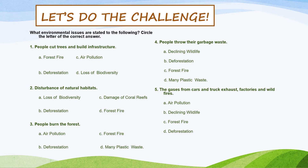Number one: People cut trees and build infrastructure. Correct — deforestation. Number two: Disturbance of natural habitats. You are right, it's letter A — loss of biodiversity. Number three: People burn the forest. Correct — forest fire, letter C.